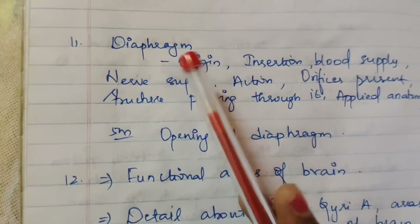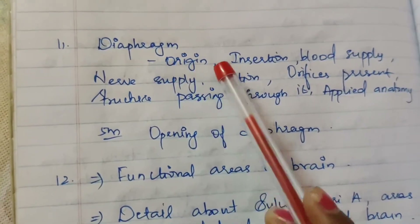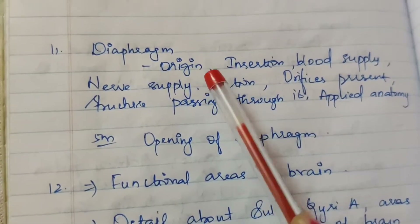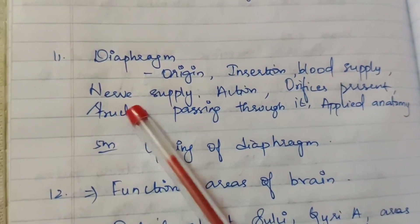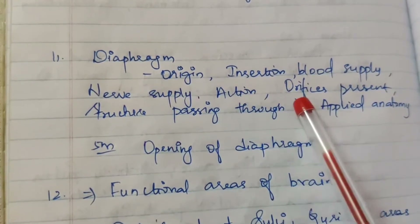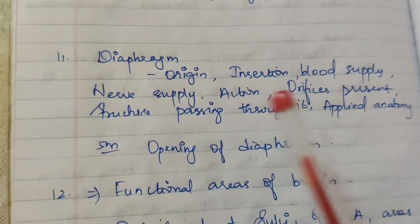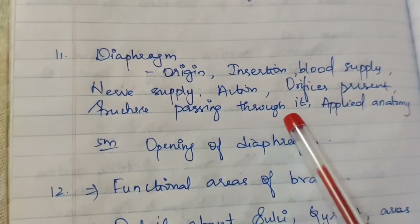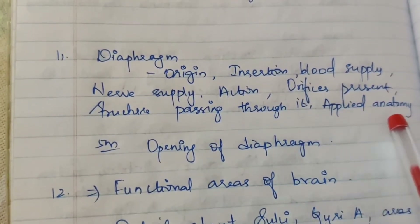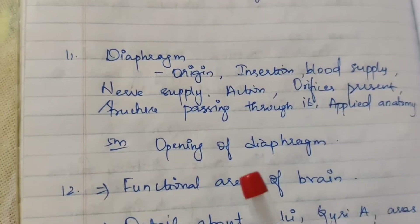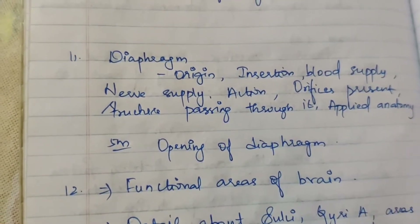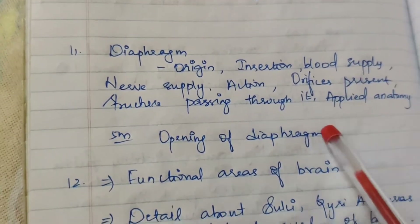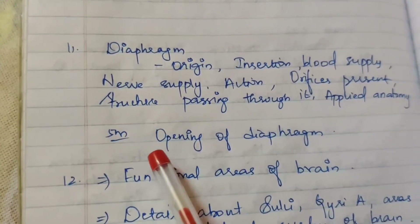Eleventh question: diaphragm. Subtopics: origin, insertion, blood supply, nerve supply, action, orifices present, structures passing through it, and applied anatomy. Applied anatomy is important for most topics. Five marks on openings of the diaphragm also asked.